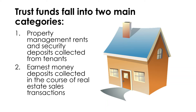The second category is earnest money deposits. When a buyer is purchasing a property, an earnest money deposit is often expected. That deposit may go directly to escrow, or however the principal directs it — or it could go to the broker to hold. If the broker holds the earnest money deposit, that is a trust fund, and it should be placed in a trust fund account. Those are the two main categories of trust funds.